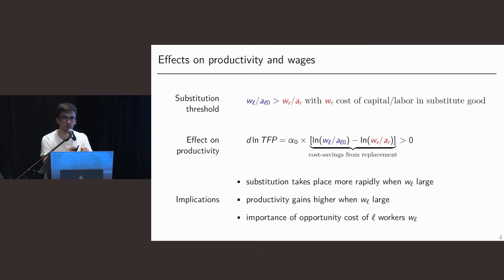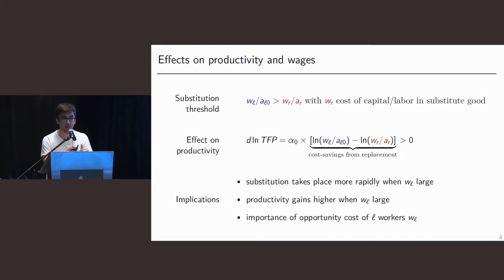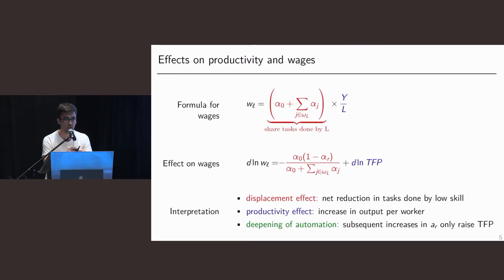The second point from this equation is that productivity gains are higher when the wage of low-skilled workers is higher. The wage of low-skilled workers tells us about their opportunity cost of time. Low-skilled workers have a high wage when they are very scarce or there are many alternative uses for them. If there are many alternative uses for low-skilled labor, their wages will be high, their opportunity cost of time will be high, and therefore automating tasks where these workers are specialized is very profitable because we can redeploy these workers to many alternative uses. This insight is quite general — it's also present in the traditional automation literature and does not depend on whether we think of capital as pure capital or as intermediates.